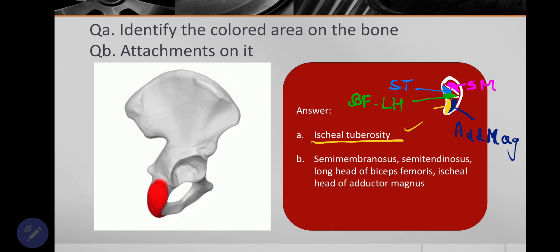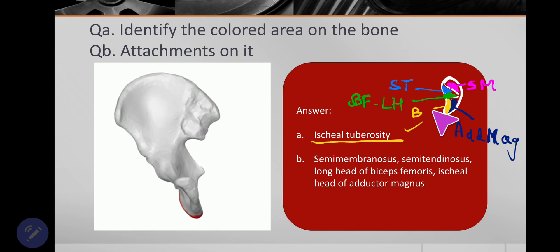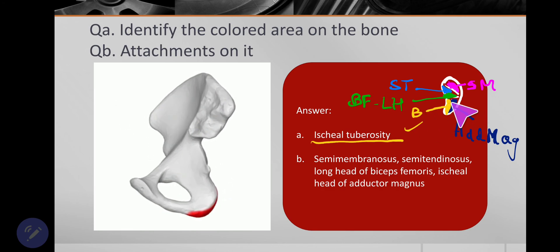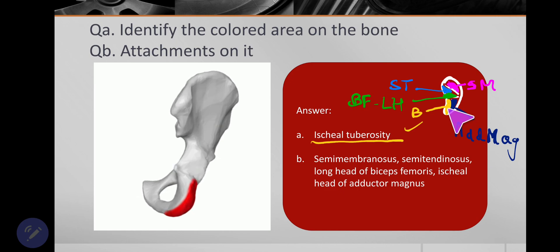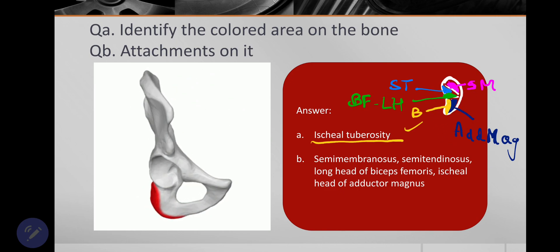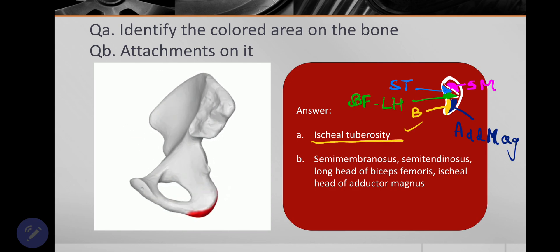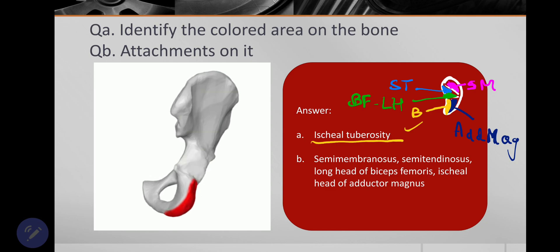This is covered by a bursa. Here you find is a bursa and this is the portion on which we sit but it's not subcutaneous because it's covered by gluteus maximus. Okay, so that was about ischial tuberosity. Okay, thank you.